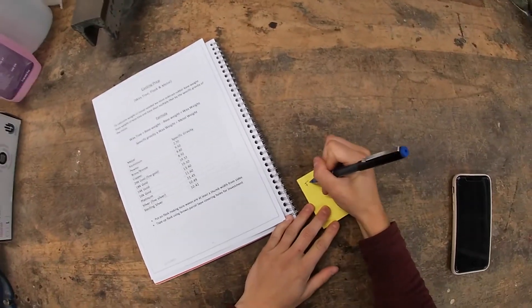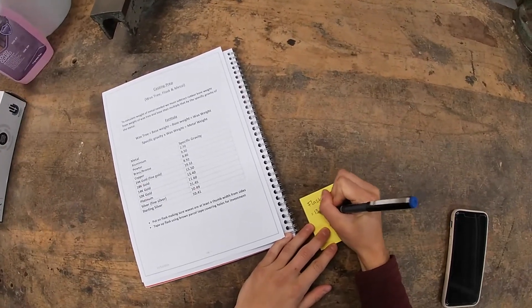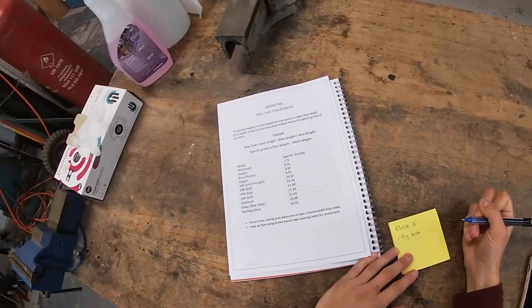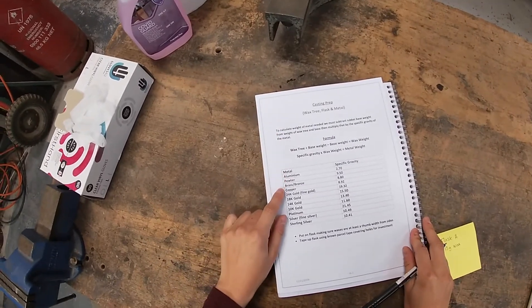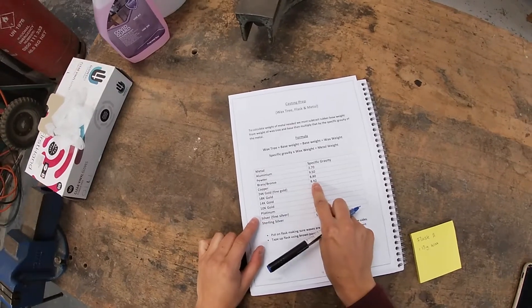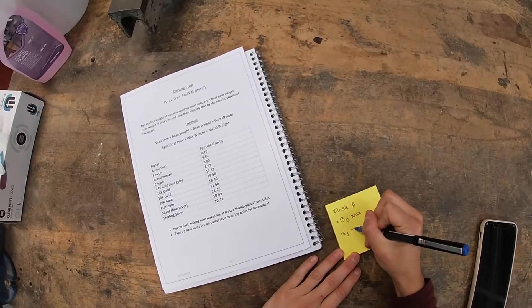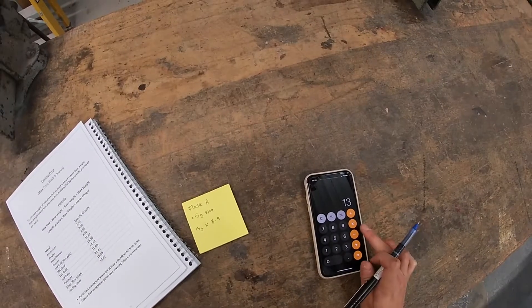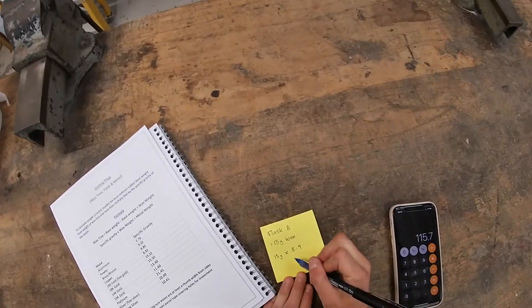Having calculated the weight of our sprue up wax tree, we now need to calculate the amount of metal that we need. For my flask A, I had 13 grams of wax and I'd like to cast in copper, so I must multiply my wax weight by the relative density of my chosen metal. For this example, it will be 13 times 8.9. This would then make 115.7 grams of copper.